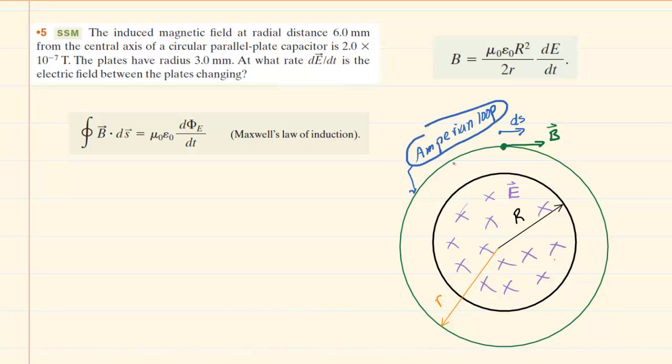This is basically just an imaginary loop that we draw in a strategic manner. In this case, we are dealing with an induced magnetic field at a distance of six millimeters, whereas the plates themselves have a radius of only three millimeters.